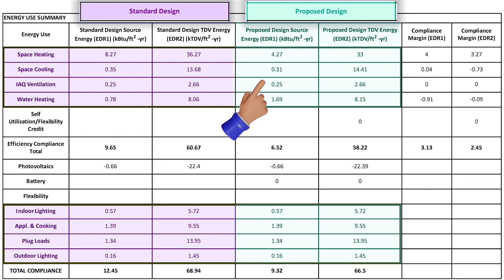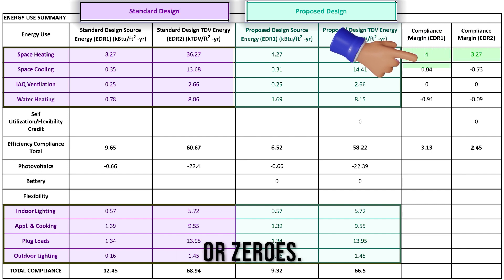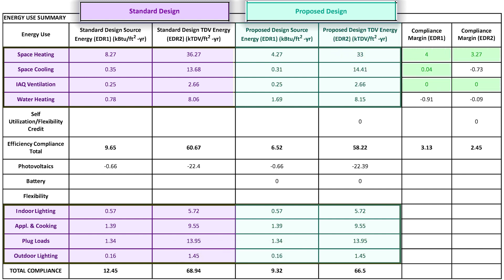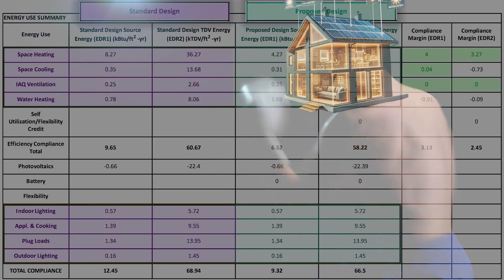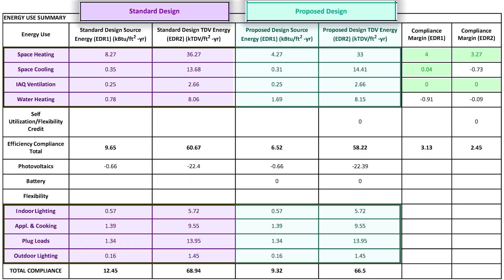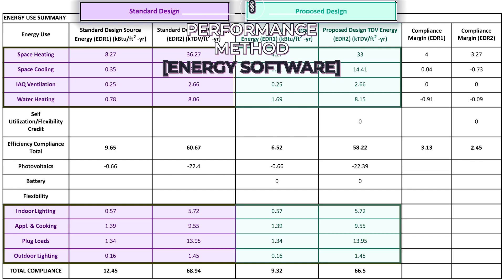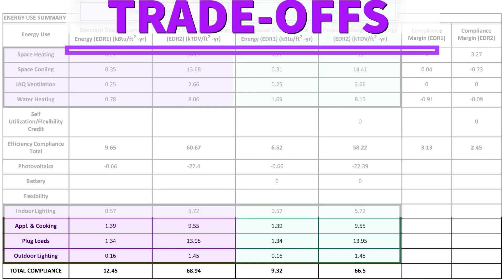Looking at the compliance margin columns, you want to see positive numbers or zeros. Positive numbers indicate that your proposed design is expected to perform better in terms of energy efficiency than the standard requirements. However, you may encounter negative numbers like in this example. This isn't a cause for concern, because the primary advantage of the energy software approach is its flexibility — it allows for what is referred to as trade-offs.